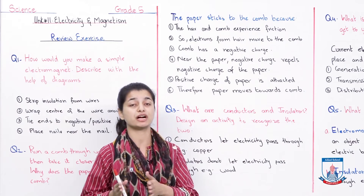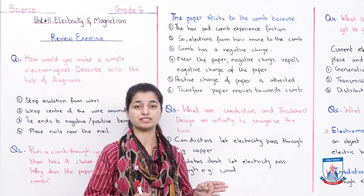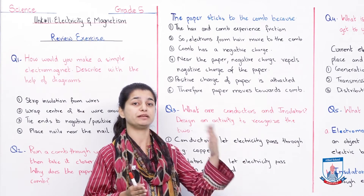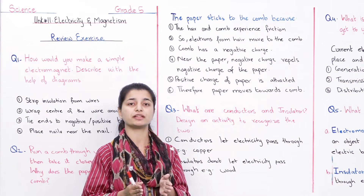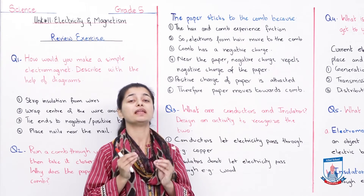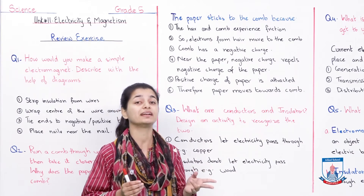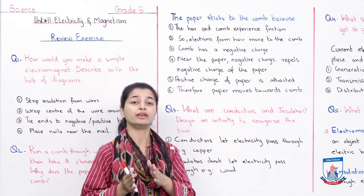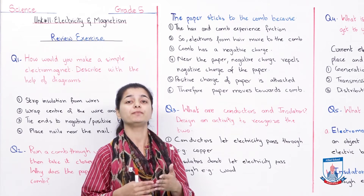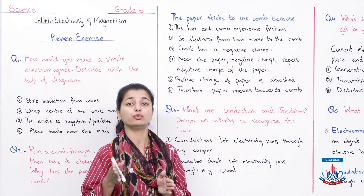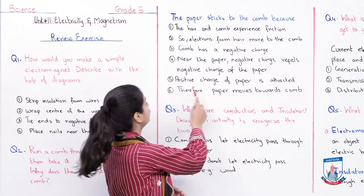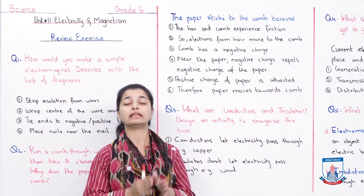Near the paper, the negative charge of the comb repels the negative charges of the paper. The positive charges of the paper are then attracted toward the comb. Everything has both positive and negative charges. The negatively charged comb repels the paper's negative charges, so the positive charges come to the front facing the comb, and those positive charges attract the negative charge of the comb. Therefore, the paper moves towards the comb.